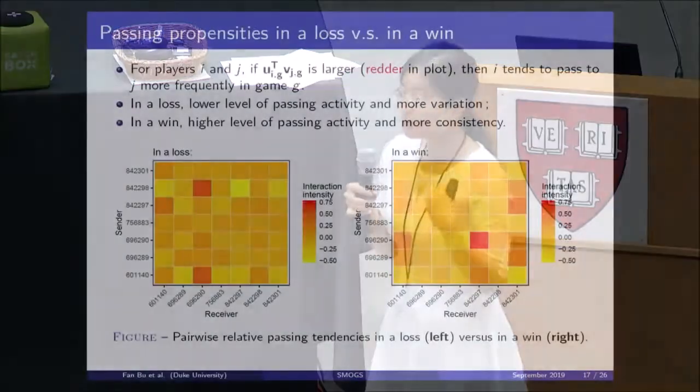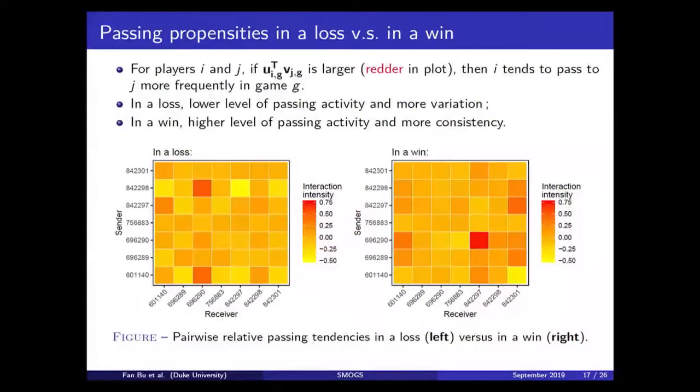In comparison, in the victory, we see that the colorings are generally more orange or more red. And that means players have a higher level of passing activity in that victory. And also, we see a slightly lower level of variance across all the tiles. And that means players passing behaviors are more balanced, more consistent, and more measured in that victory.